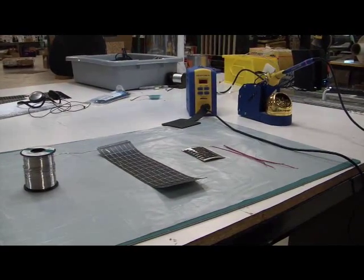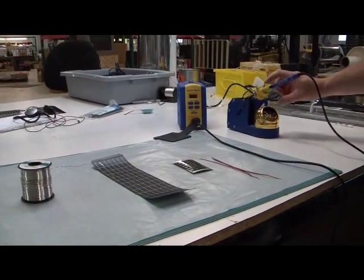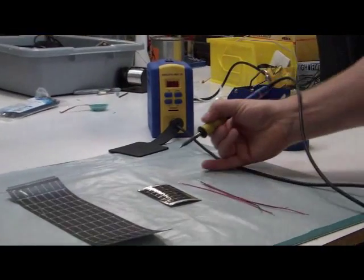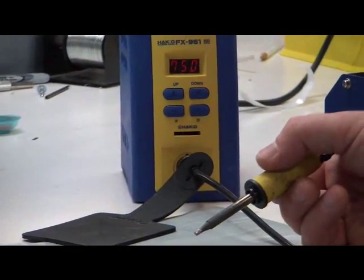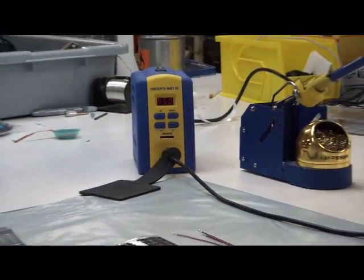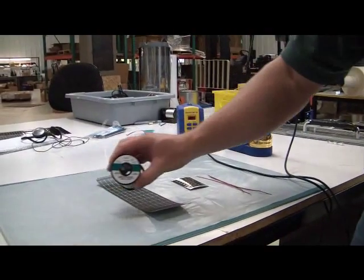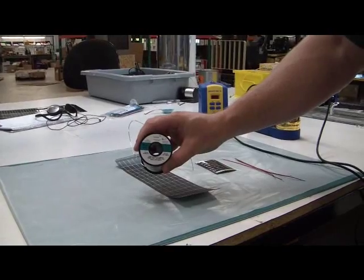We have our soldering iron set up at 750 degrees Fahrenheit. We have a small tip on here for soldering to the module, and we have our lead-free Kester solder to make us RoHS compliant.